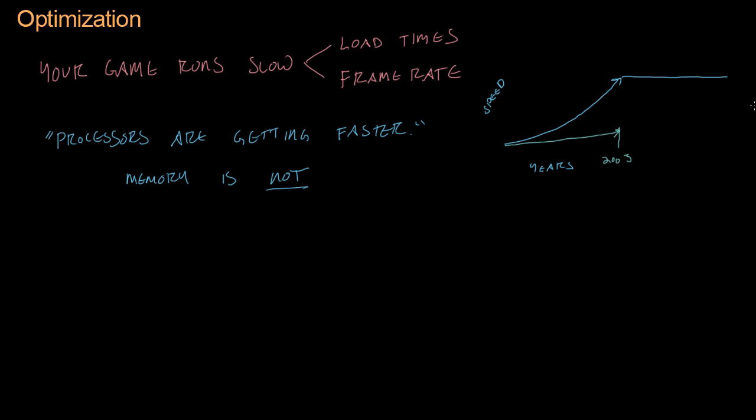So if processors are not getting faster, then if you want your game to have better graphics and do cooler things, then you have to optimize your game. Another thing you will hear, which is a counter argument - again, we're playing the devil's advocate - is that compilers can optimize.